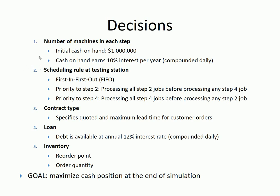The second decision is the scheduling rule at the testing station — that's station 2. We have a scheduling rule here because there are two steps, step 2 and step 4, taking place in this station. By default the rule is first in, first out — whichever sample comes in first is processed earlier. You can change that by giving priority to step 2 or step 4. If you give priority to step 2, the station will process all step 2 jobs before processing any step 4 jobs.